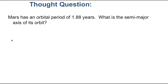Here's one for you: Mars has an orbital period of 1.88 years. What is the semi-major axis of its orbit? I'm not going to do this one with you. p squared equals a cubed. In this case, you're going to plug in 1.88 years for the period, square it, take the cube root, and that should give you the semi-major axis in astronomical units. Try it out — do the equation, see what you get for a. You can always look it up in the back of the book or online to check what the actual semi-major axis of Mars' orbit is. Do it and test yourself — you'll be well on your way to solving homework and exam problems of this type.